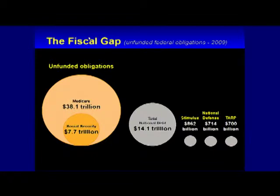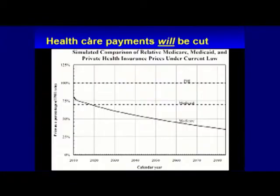Two-thirds of the shortfall is the Medicare program by itself. We have met the enemy — he is us. The ACA, the Federal Health Reform Law, contains some projections of reduced payments to physicians and hospitals to make this financially viable. That line diving down is labeled Medicare. In order to make those budgets appear to balance to pass that legislation, they made assumptions that payments for Medicare patients would decrease, so that around 2017, in theory, the payments for Medicare patients would fall below payments for Medicaid patients.